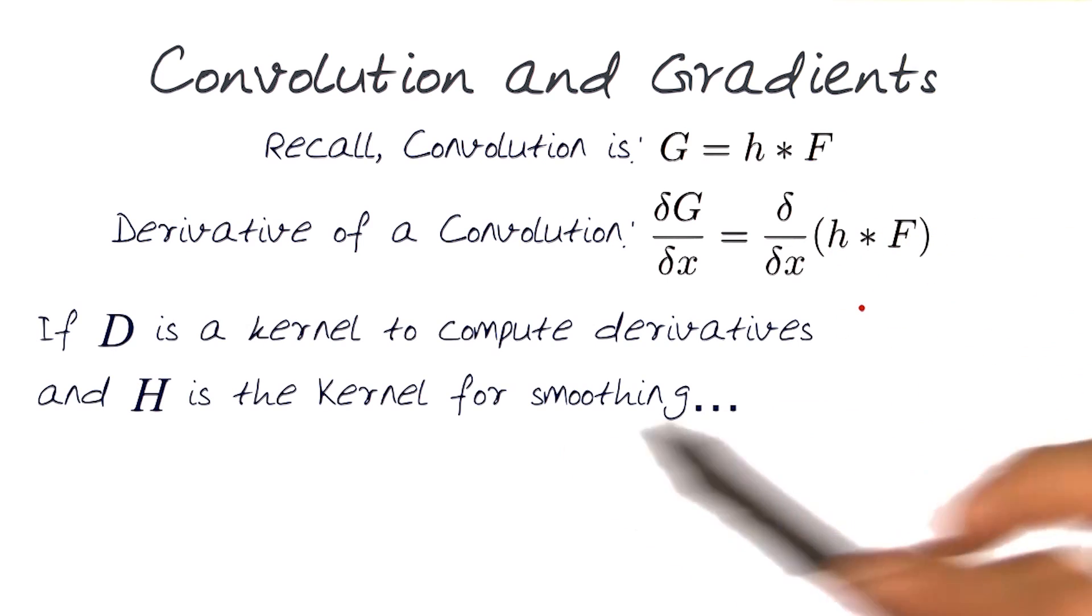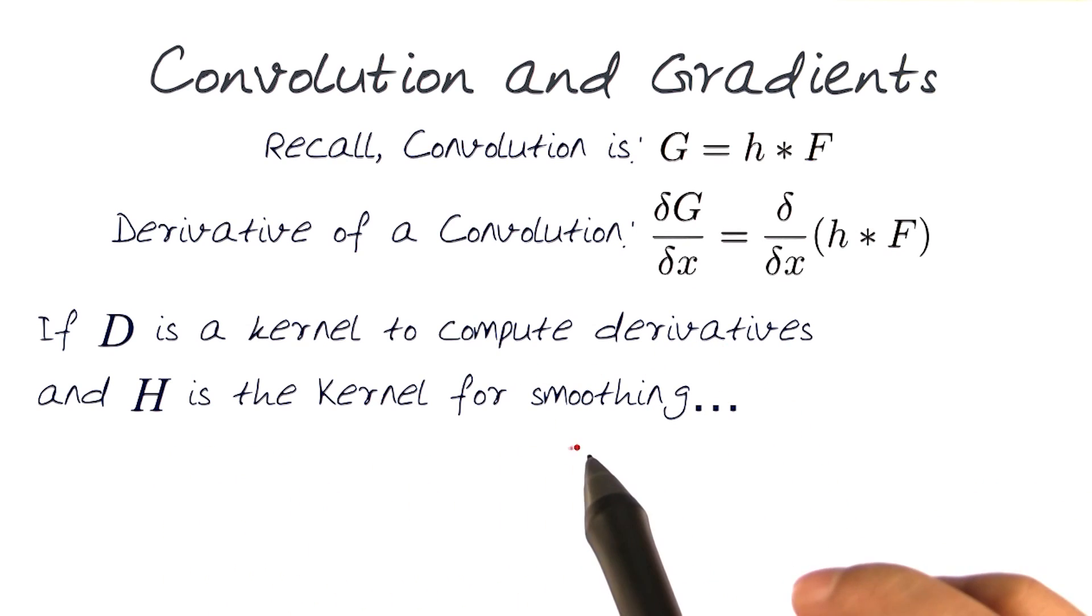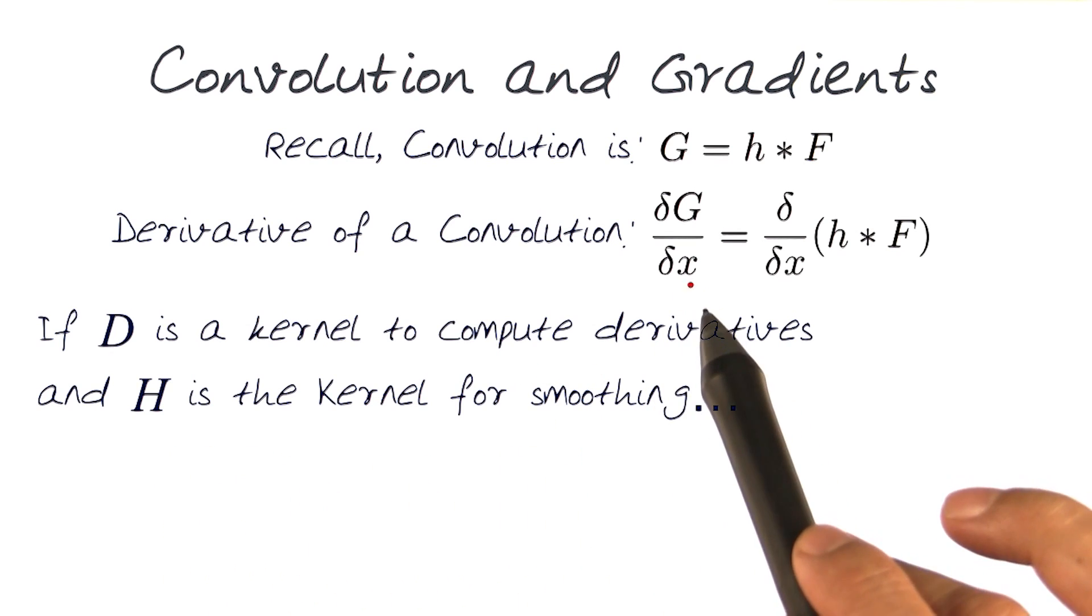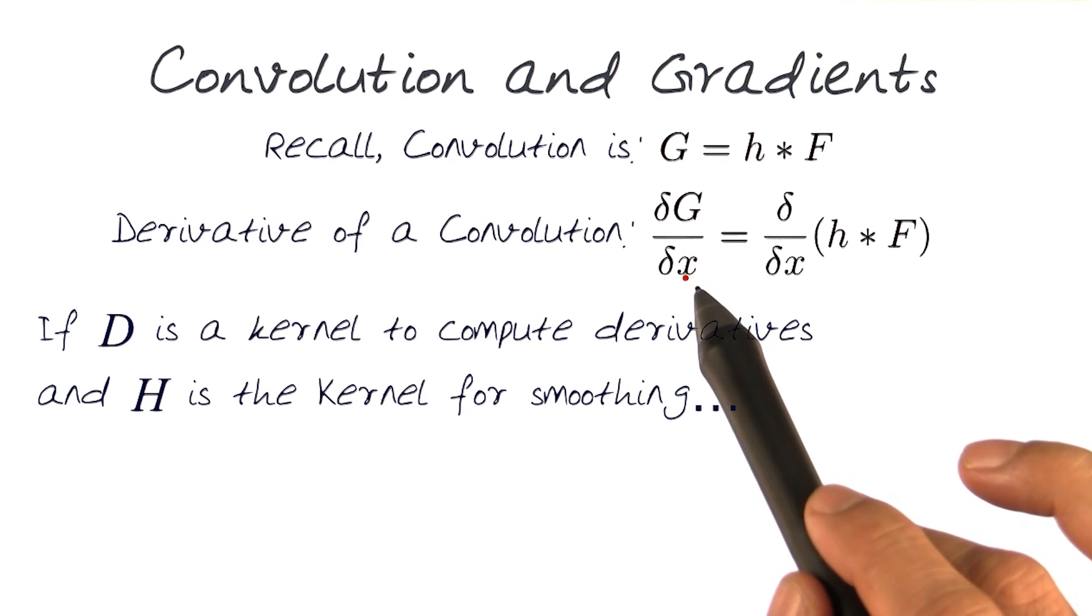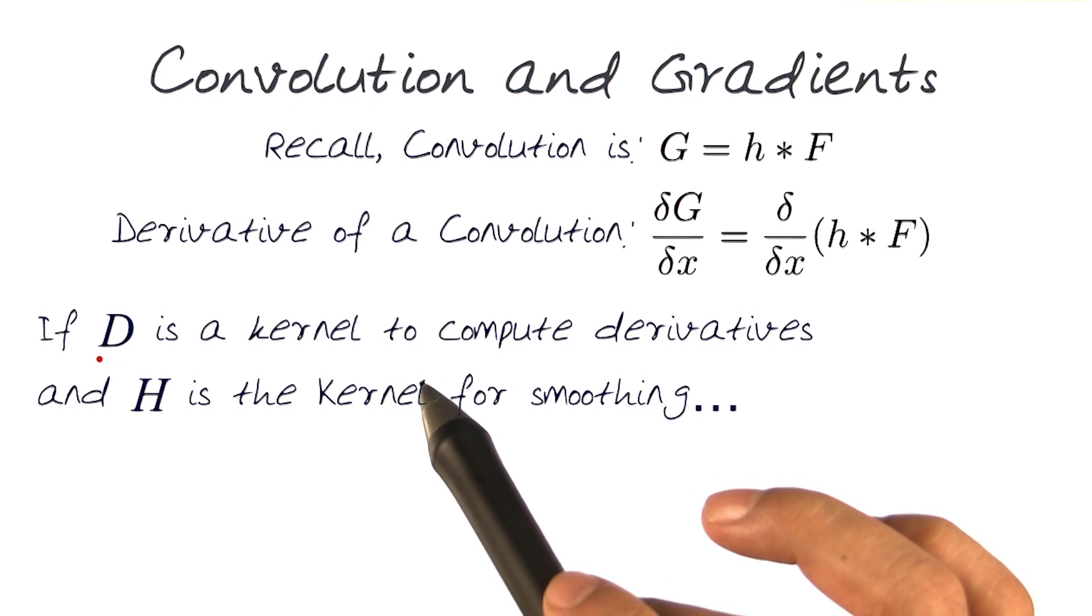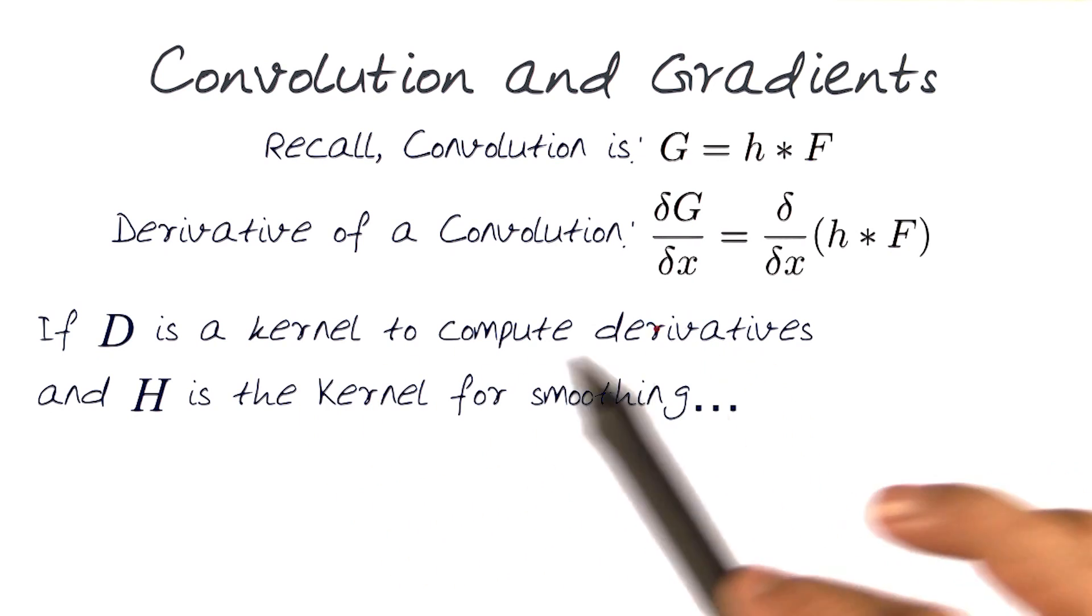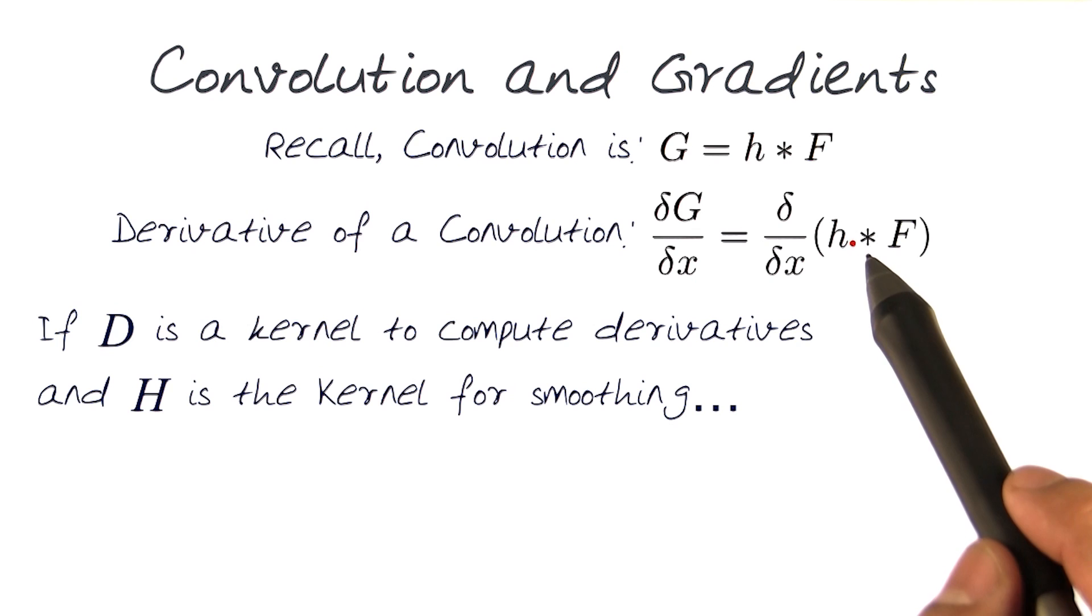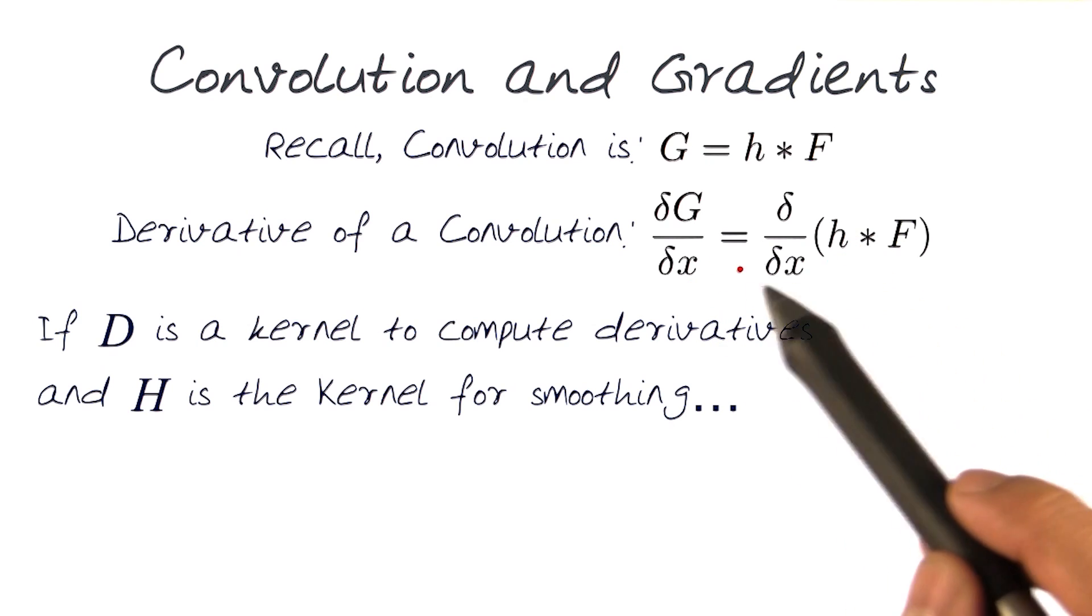To help us, let's say if D is the kernel to compute the derivatives, and H is the kernel for smoothing. So basically, del of dx could actually become an operation, because we've represented that as a kernel to compute derivatives. And H is a kernel for smoothing, so we can rewrite this formulation.